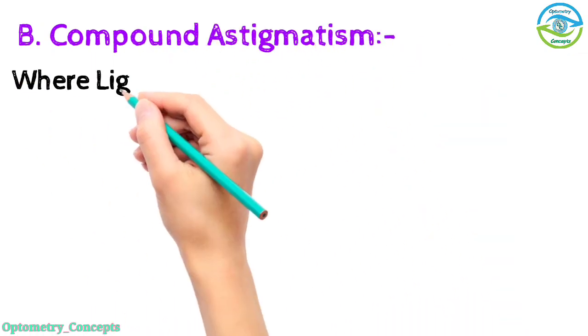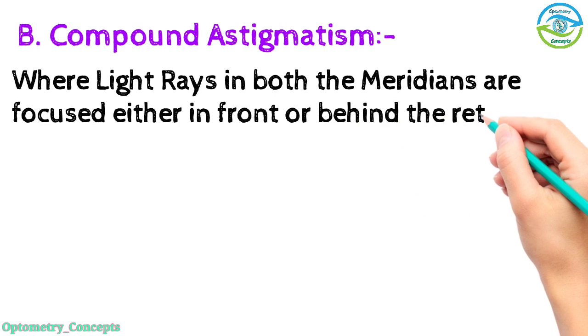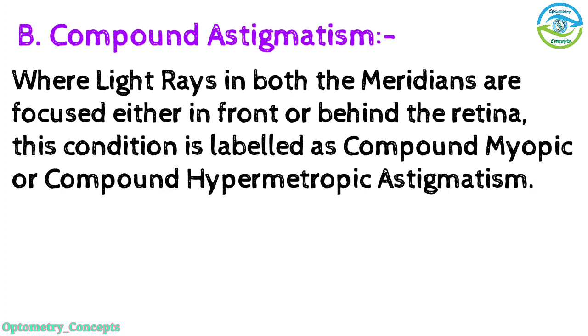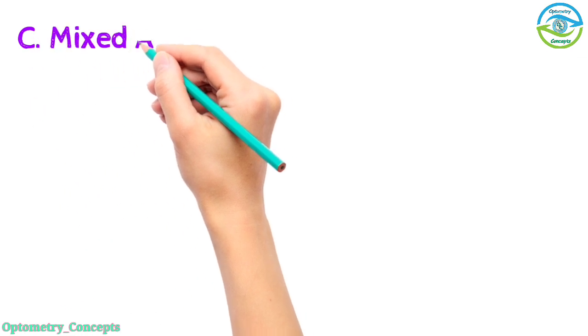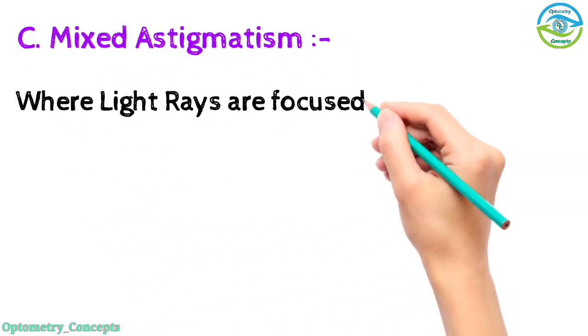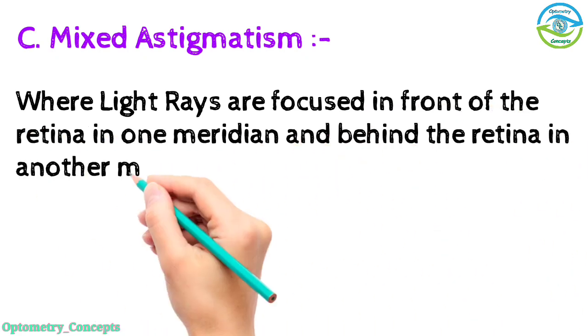Compound astigmatism - where light rays in both meridians are focused either in front or behind the retina. This condition is labeled as compound myopic or compound hypermetropic astigmatism respectively. Mixed astigmatism - where light rays are focused in front of the retina in one meridian and behind the retina in other meridian.